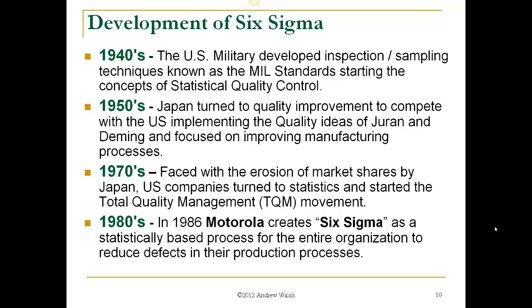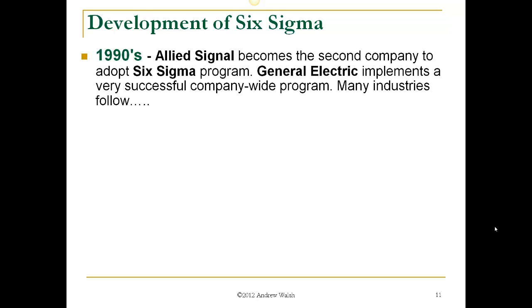In the 1980s, Motorola created the concept and program called Six Sigma — a statistically-based process for the entire organization to get rid of defects in their production processes. They became keenly aware that their processes were terrible and needed to be improved. In the 1990s, Allied Signal followed and became the second company to adopt Six Sigma company-wide. General Electric then implemented a very successful company-wide program that is still in place today, and many industries began to follow them.